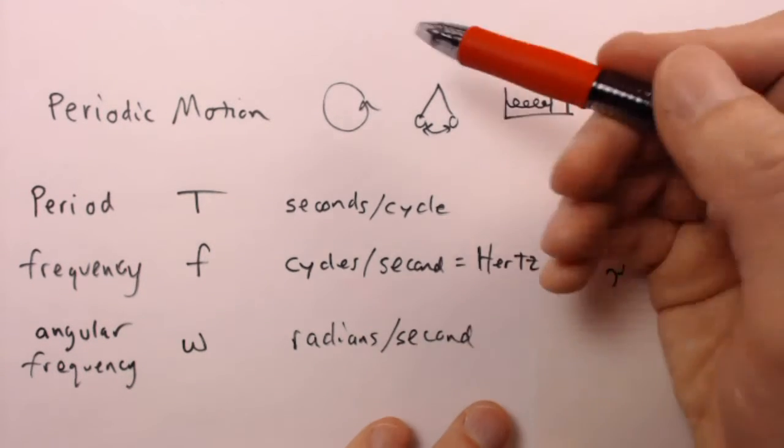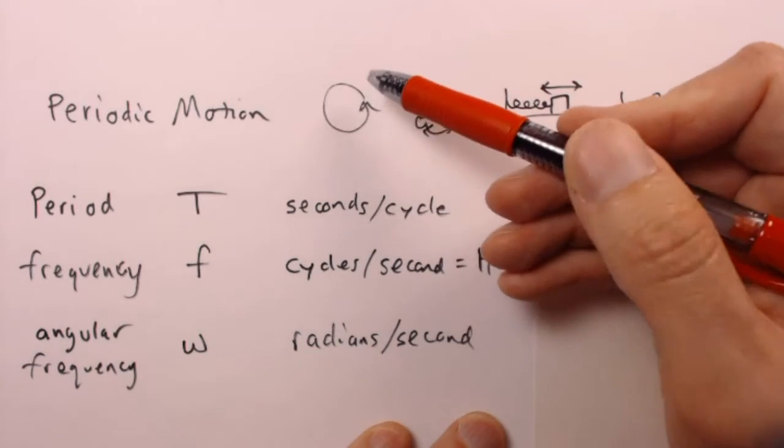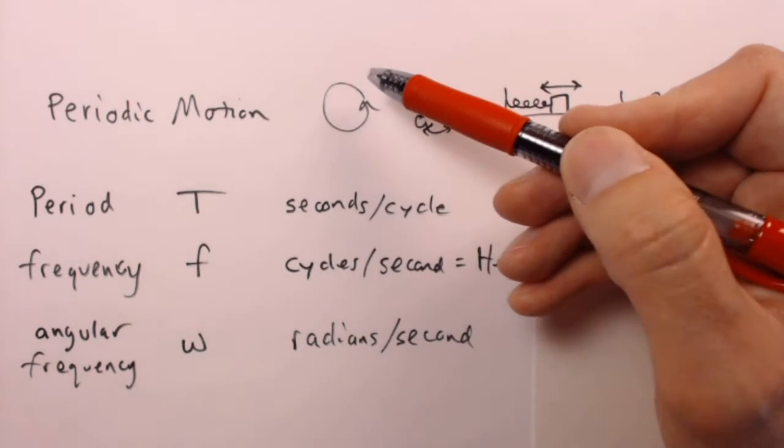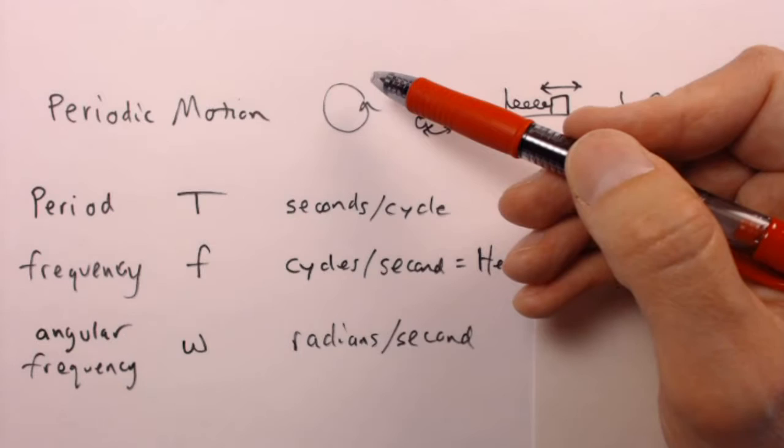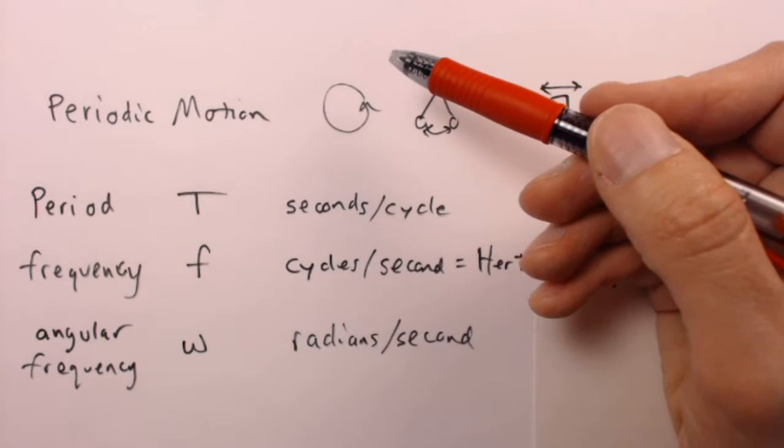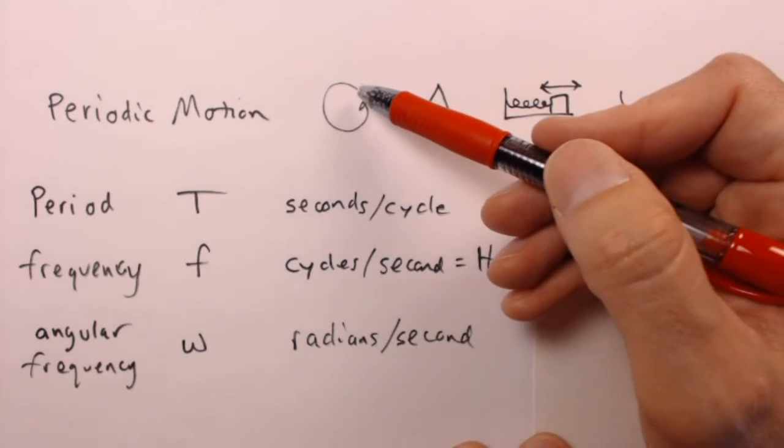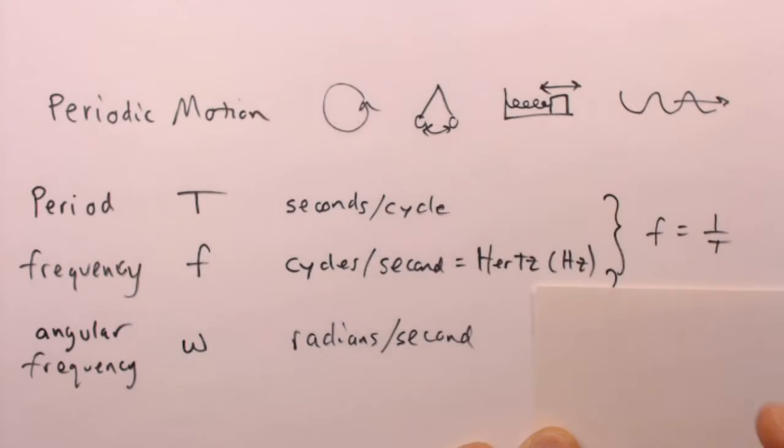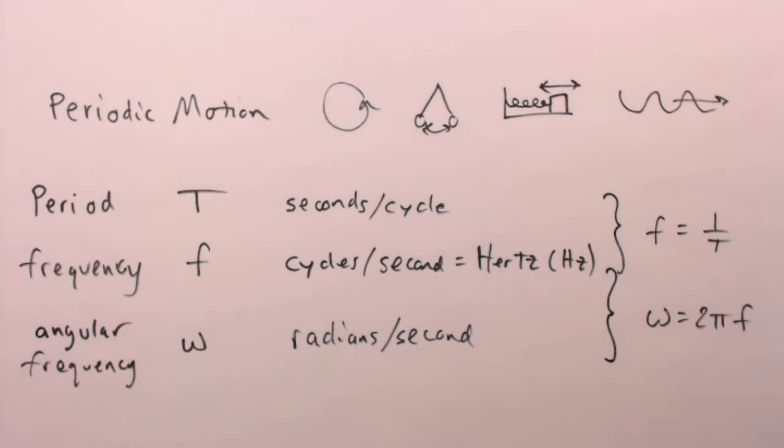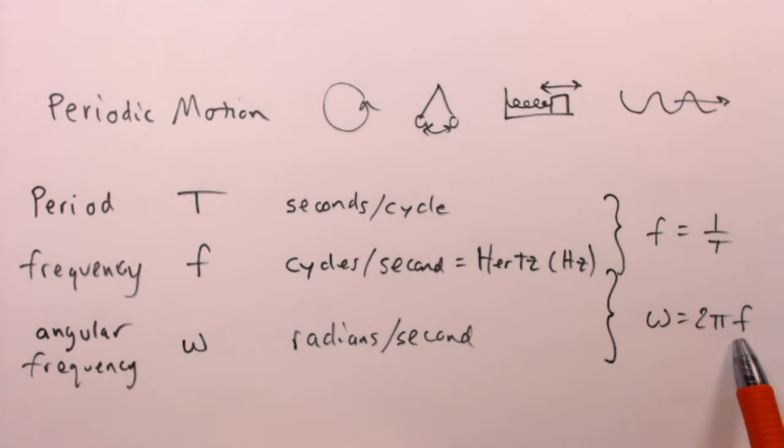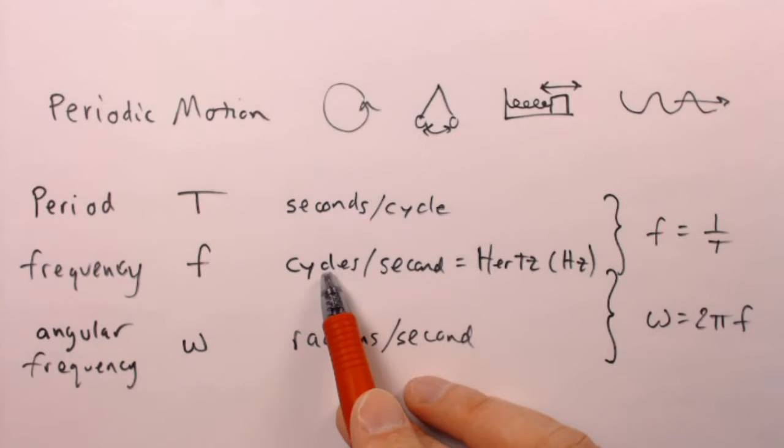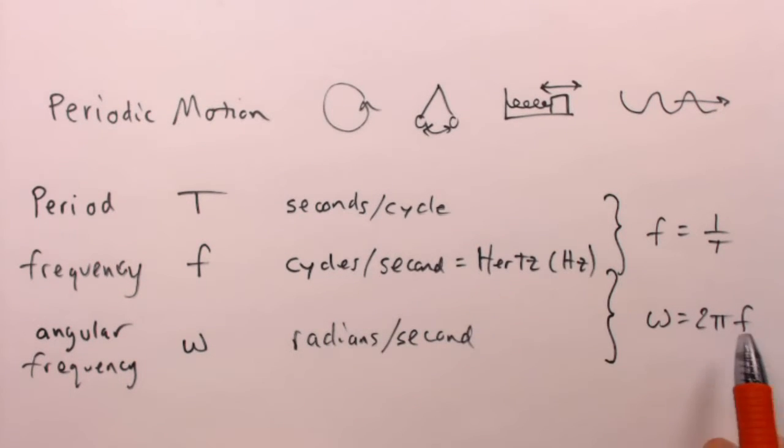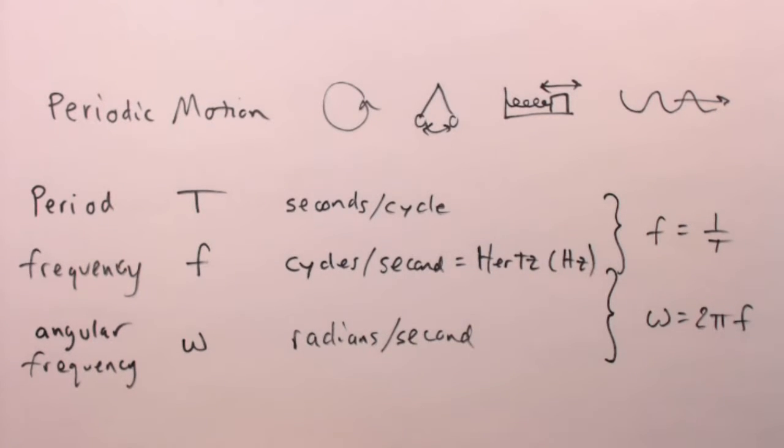And you can see how this works in the case of circular motion. Every circle has angles that you can measure in radians or degrees or what have you. And since each circle has exactly 2π radians, it follows then that ω is equal to 2π times f. After all, for each cycle, there's going to be exactly 2π radians. So you just convert by multiplying the cycles by 2π, and there you have it: radians.